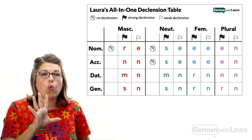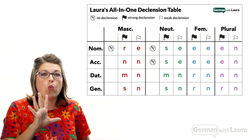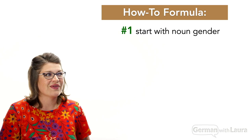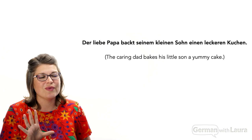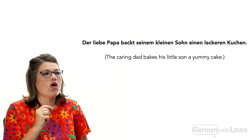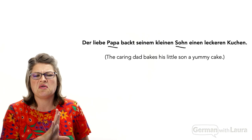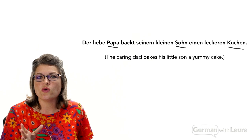So if that's what is happening, we need to dive into why that is happening, because you need to know how to use this table. The very first step in using that all-in-one declensions table is that we have to start with noun gender. All nouns in German have gender. In this sentence, the nouns we are working with are all masculine nouns. Papa is a masculine noun. Son is a masculine noun — that makes sense, that seems fairly intuitive.